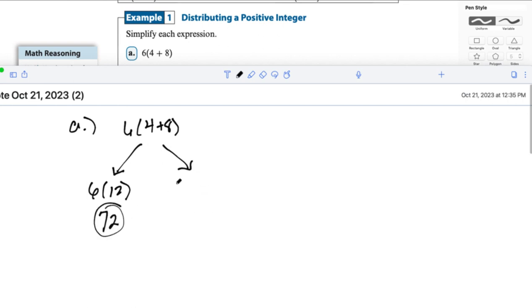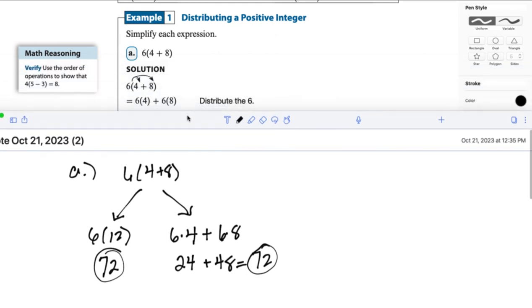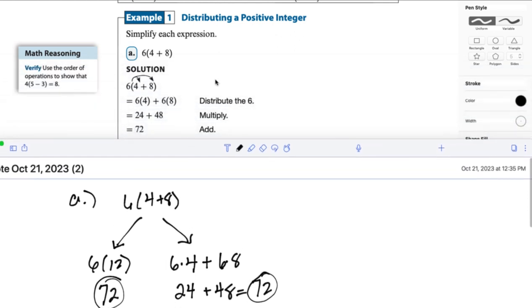But if we use the distributive property, we know that we can write this problem as 6 times 4 plus 6 times 8. 6 times 4 being 24 and 6 times 8 being 48. When I add those up, I end up with 72. What this shows is two ways that work to get the same answer.